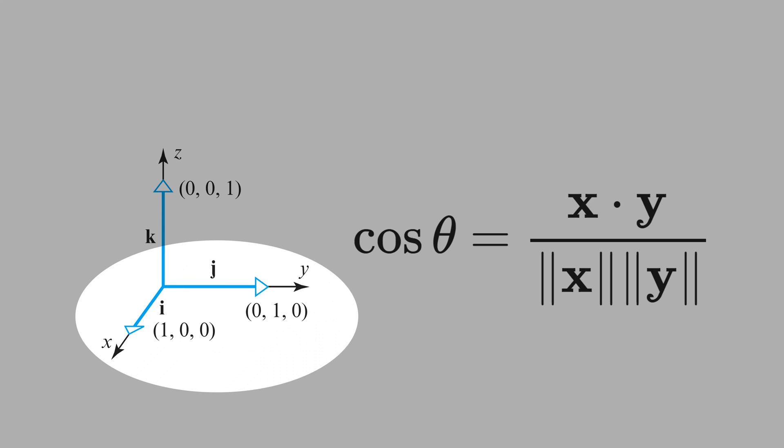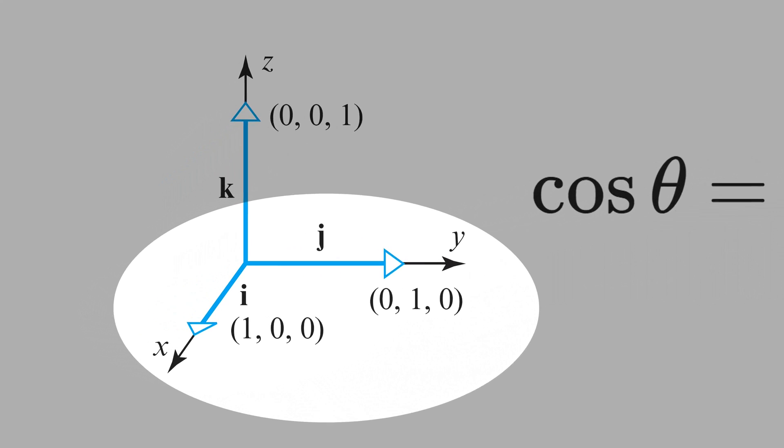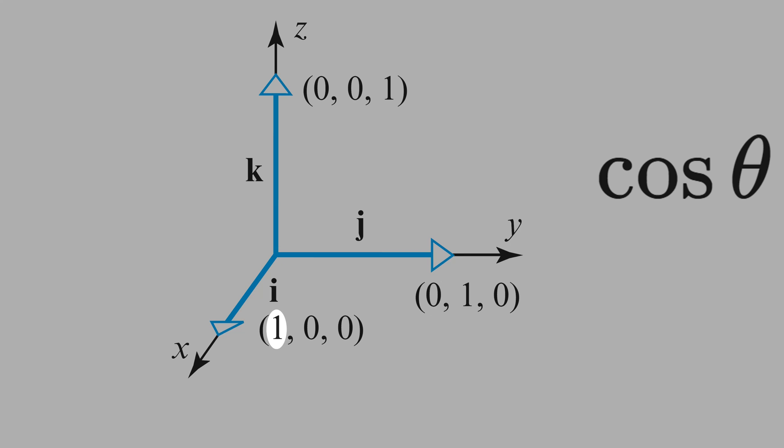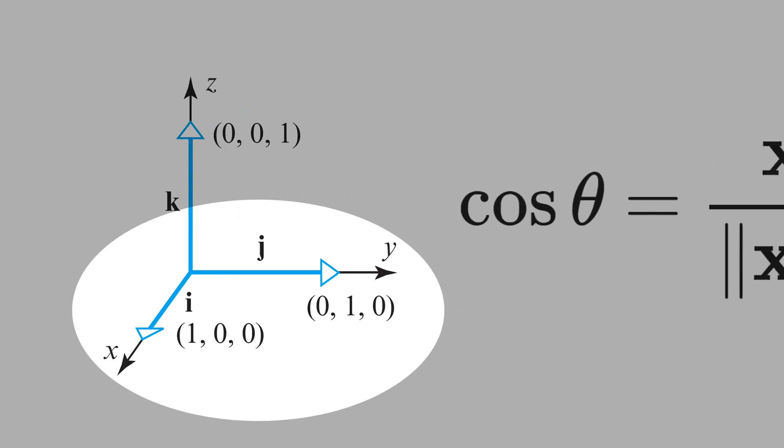Now let's calculate the dot product of i and j. 1 times 0 is 0, 0 times 1 is 0 and 0 times 0 is 0. That means the dot product is 0.